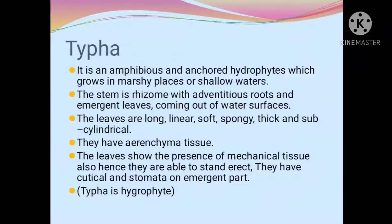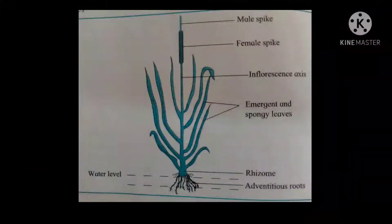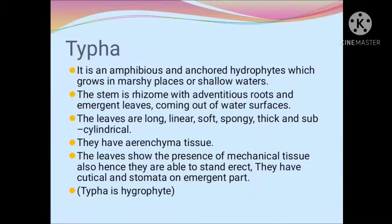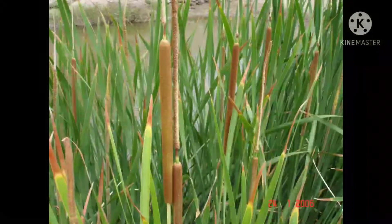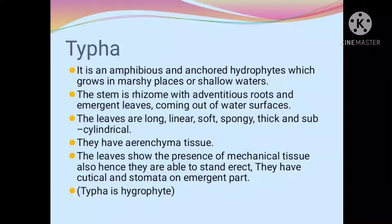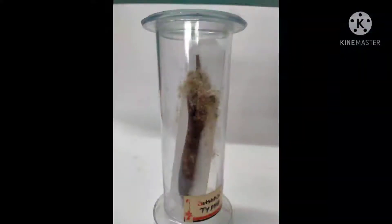The next specimen is typha, also known as cattary. It is an amphibious anchored hydrophyte which grows in marshy places or shallow waters. The stem is a rhizome with adventitious roots and emergent leaves coming out of the water surface. The leaves are long, linear, soft, spongy, thick and sub-cylindrical, and they have aerenchyma tissues. The leaves show presence of mechanical tissue and hence are able to stand erect. They have cuticle and stomata on the emergent part. Actually, typha is a hygrophyte. This is a laboratory specimen — you have to observe and write down a few points related to it.